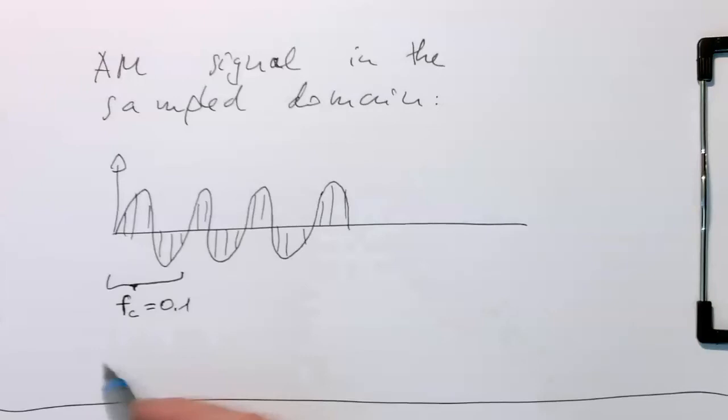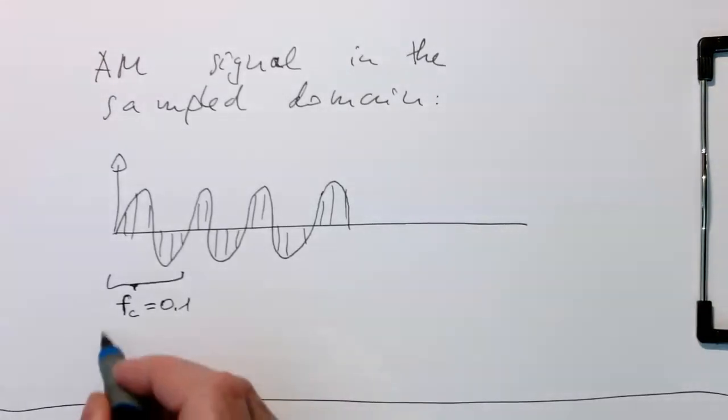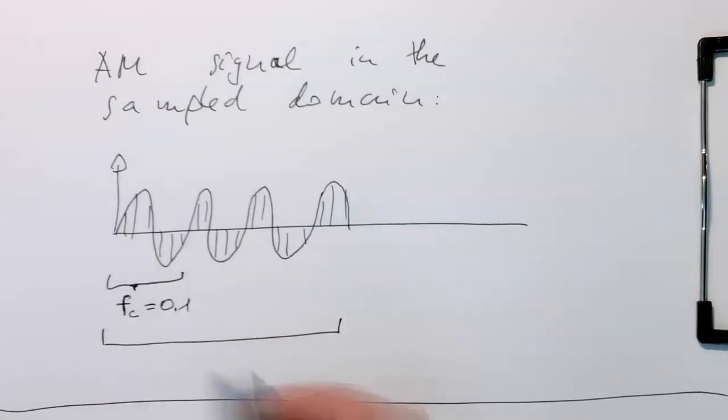And then let's say up to this point here, this is a duration of one symbol. And this is T, T in samples. This is our T.